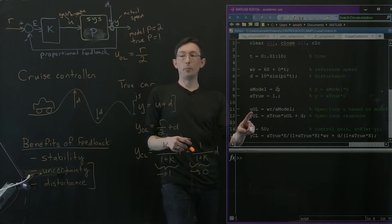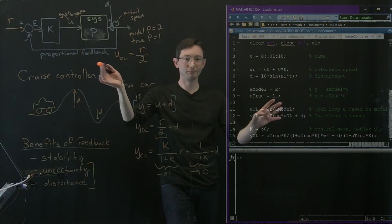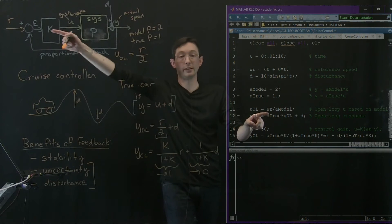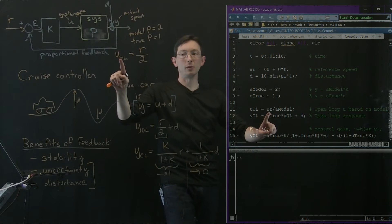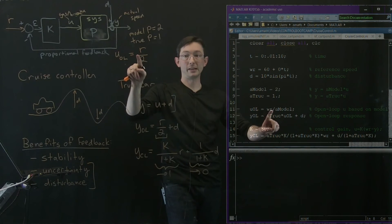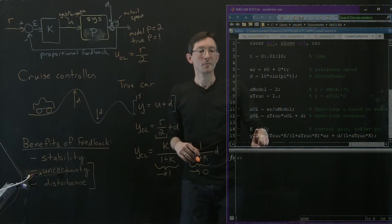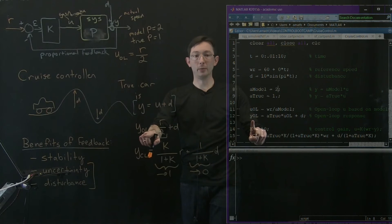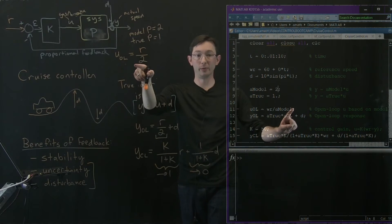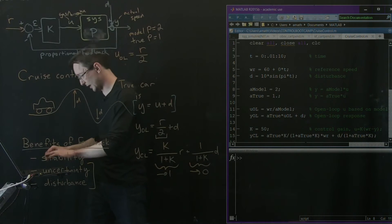So U open loop is just my reference. So sometimes I call it WR, W is usually a vector of reference disturbance and noise. So WR is just the reference. So my open loop control is my reference divided by my model for P. So it's my reference divided by two. That's my open loop control strategy. Not a very good strategy. And if I compute my output, Y open loop is my true P times U open loop plus disturbances. So let me just stop here and I'll plot this part.